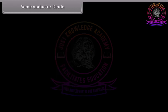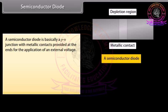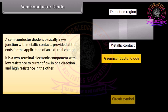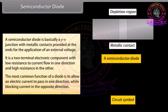A semiconductor diode is basically a P-N junction with metallic contacts provided at the ends for the application of an external voltage. It is a two-terminal device. The arrowhead corresponds to the P-type terminal of the device and points in the direction of easy current flow. It has low resistance to current flow in one direction and high resistance in the other. The most common function of a diode is to allow an electric current to pass in one direction while blocking current in the opposite direction.